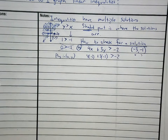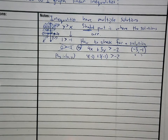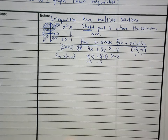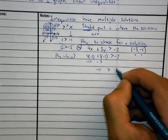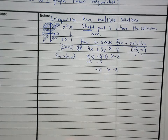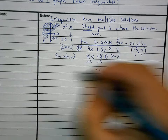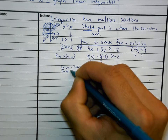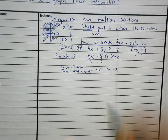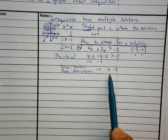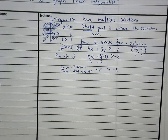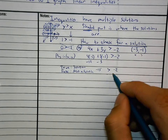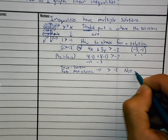So I plugged in x and y: 4 times negative 3 — what is that? Negative 12. And 3 times negative 1 is negative 3. Putting together negative 12 and negative 3 gives negative 15. Is negative 15 greater than negative 2? It is not — this is false. So this is not a solution. True means it's a solution; false means it's not a solution.